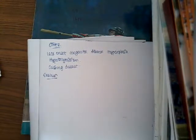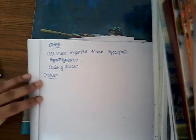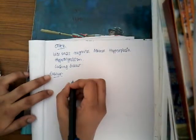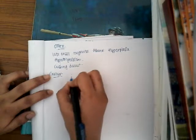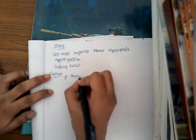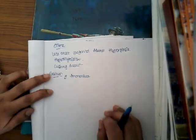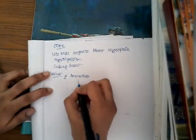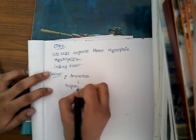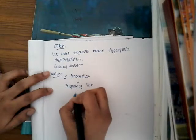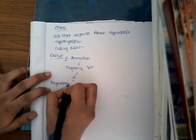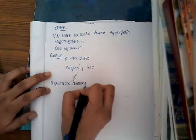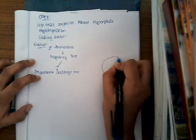The main test we do for secondary amenorrhea is the progesterone challenge test. When a woman comes with secondary amenorrhea — absence of periods for either three cycles if irregular or six cycles if regular — we first do a pregnancy test to rule out pregnancy. If the pregnancy test is negative, then we do the progesterone challenge test.